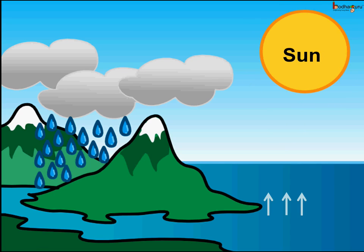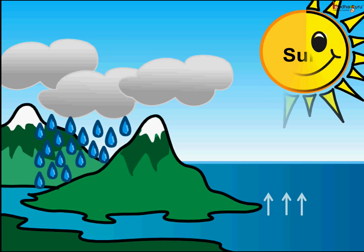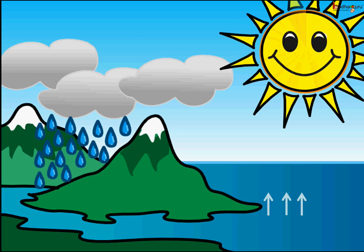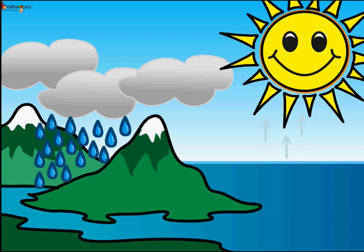And this is not it — the cycle continues. Again, the sun heats up the water in the lakes, ponds, etc. Water vapor is formed and then clouds are formed. Then again we get rain, and again the lakes are filled up.